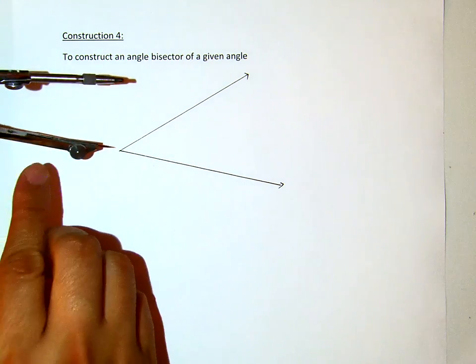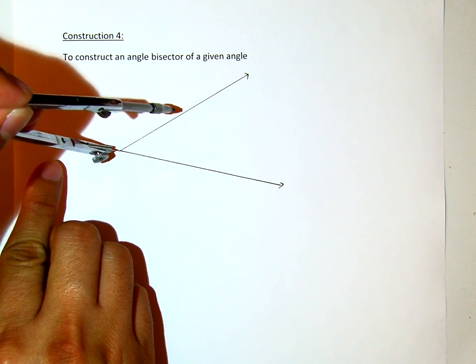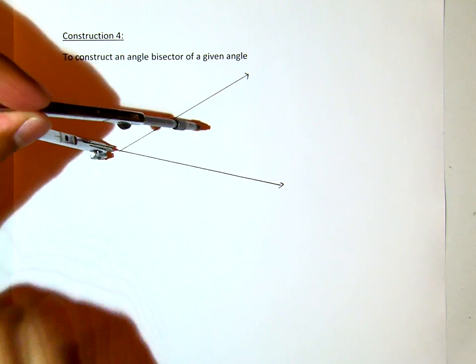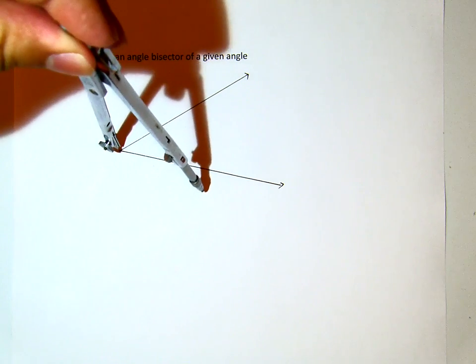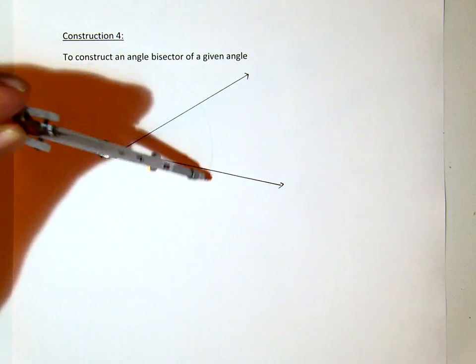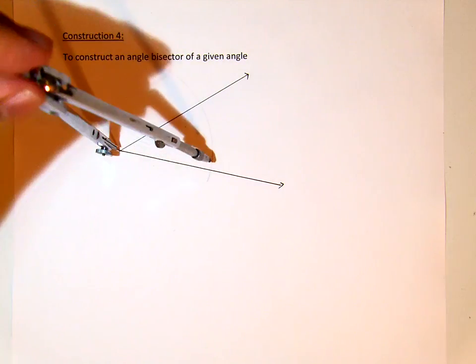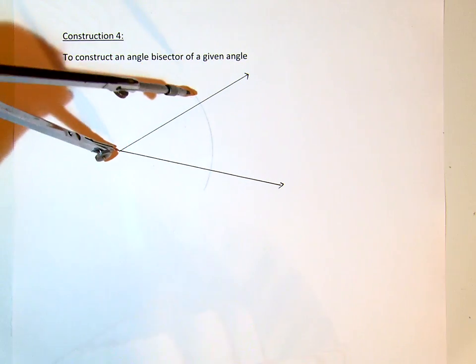The first thing I will do is put my pivot leg of the compass at the vertex, and then I will swipe it, swiping passing through the two legs.